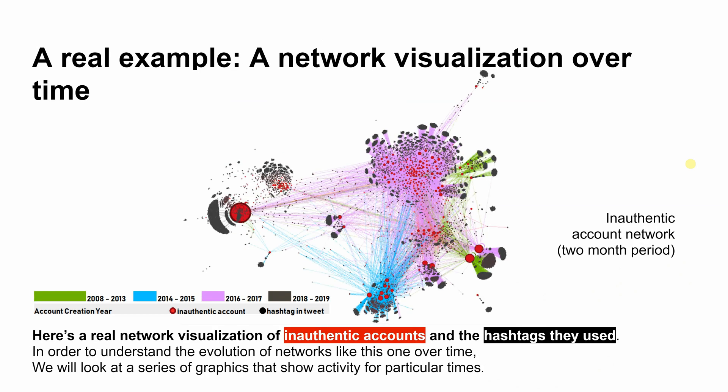A real example — a network visualization over time. Here's a real network visualization of inauthentic accounts and the hashtags they used. In order to understand the evolution of networks like this one over time, we will look at a series of graphics that show activity for particular times.